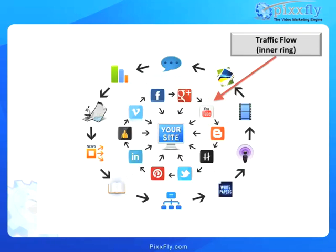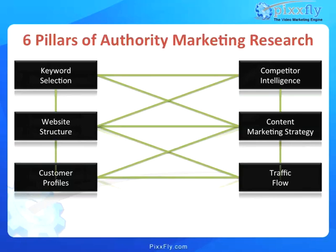So the outer ring was your content marketing — the type of content that you want to do. The inner side is looking at where the traffic is flowing, and you want to be able to channel that content to where the traffic is in fact flowing, and then ultimately using that to lead to your monetization point or your central hub. So those are the six pillars of authority marketing research.